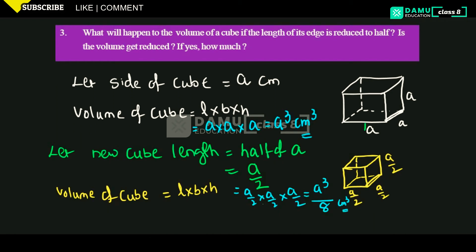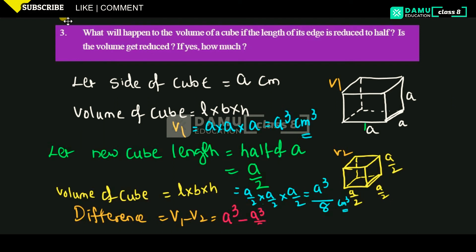So, it is reduced — 1 by 8 part. Volume does get reduced. Yes, it is reduced to A cube by 8. Then, by how much? If you want to find how much, you take the difference. Let this be V1 and this be V2. Then V1 minus V2 equals A cube minus A cube by 8.